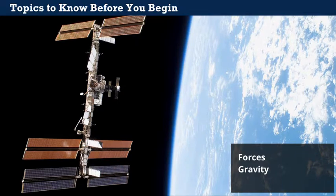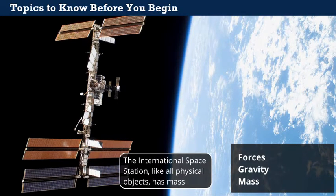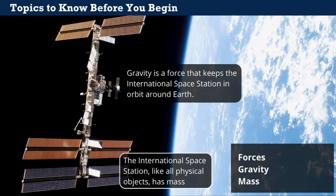You should also understand that objects have mass. Here we see the International Space Station, used for research by many groups orbiting Earth. Forces were used to launch the components of the station into space, and gravity plays a role in keeping it in orbit.